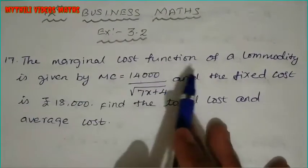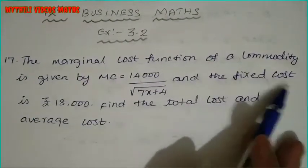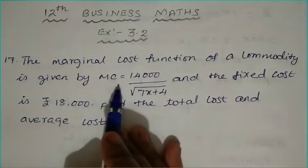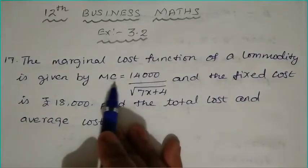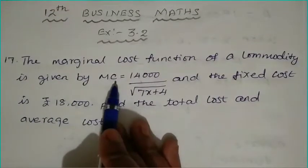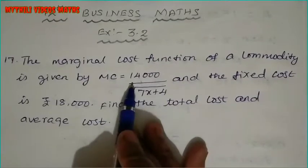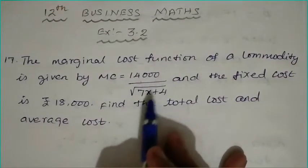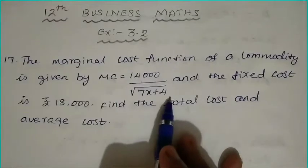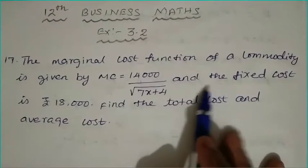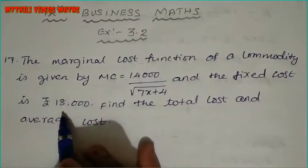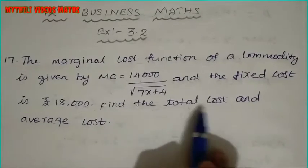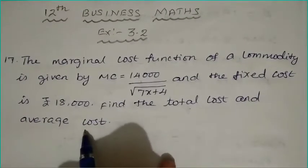The marginal cost function of a commodity is given by MC equal to 14,000 divided by root of 7x plus 4. The fixed cost is Rs. 18,000. We need to find the total cost and average cost.